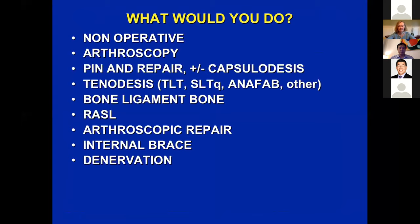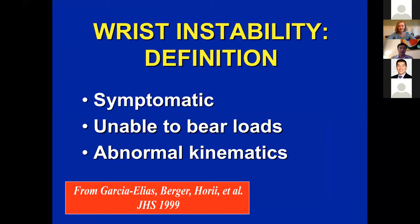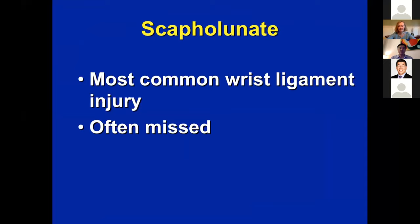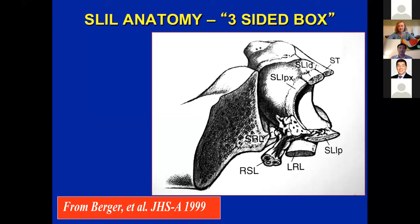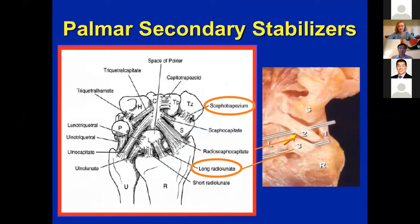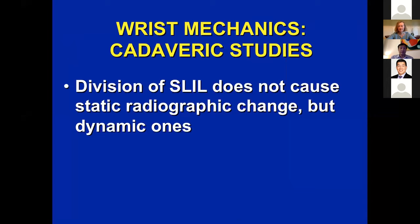Scapholunate is the most common wrist ligament injury and is often missed. The scapholunate is a complex — meaning the scapholunate interosseous ligament plus secondary stabilizers. The SLIL anatomy is a three-sided box: dorsally is the strongest, proximally is the weakest, and palmarly is in the middle. Very important secondary stabilizers include the STT, long radiolunate on the palmar side, and the DIC — dorsal intercarpal ligament on the dorsal side. In cadaveric studies, dividing the SLIL alone does not cause static radiographic change, but secondary stabilizers must be injured before static radiographic change occurs.